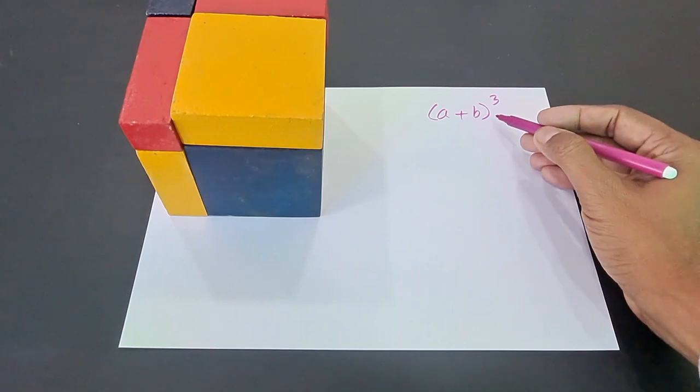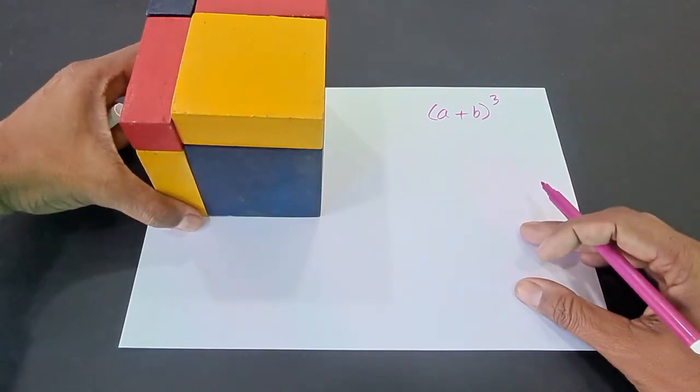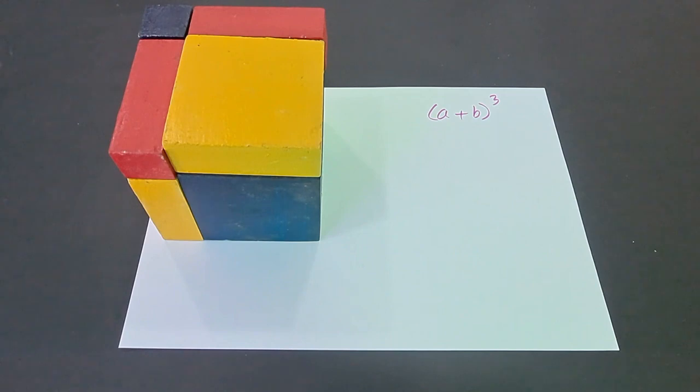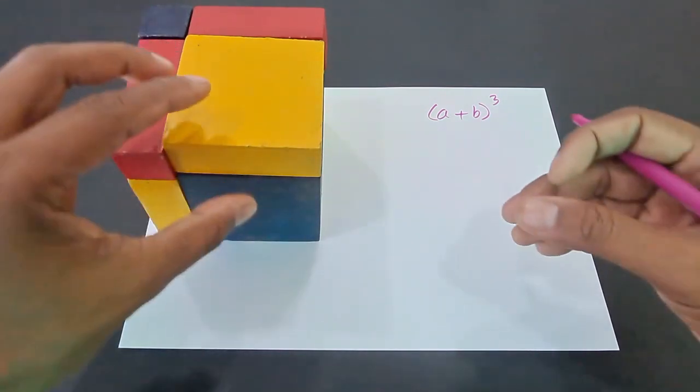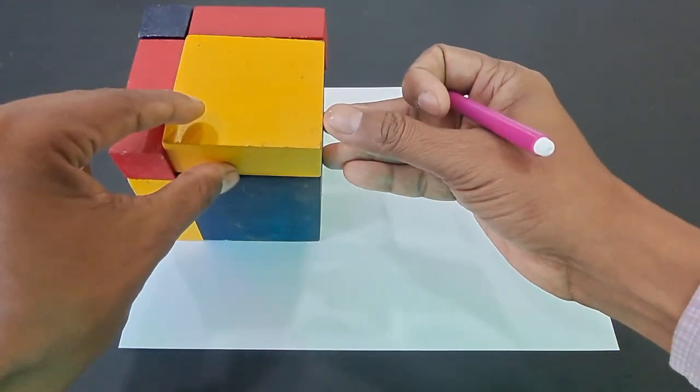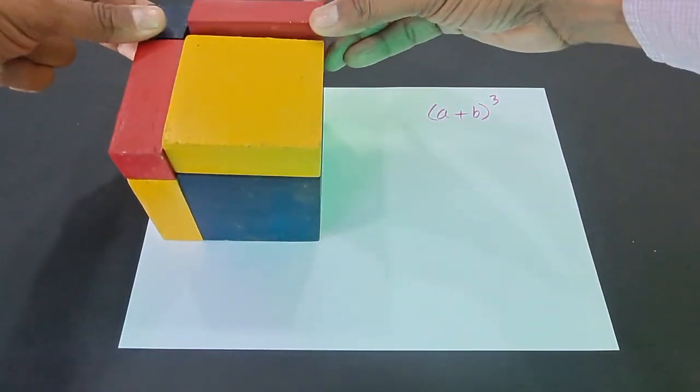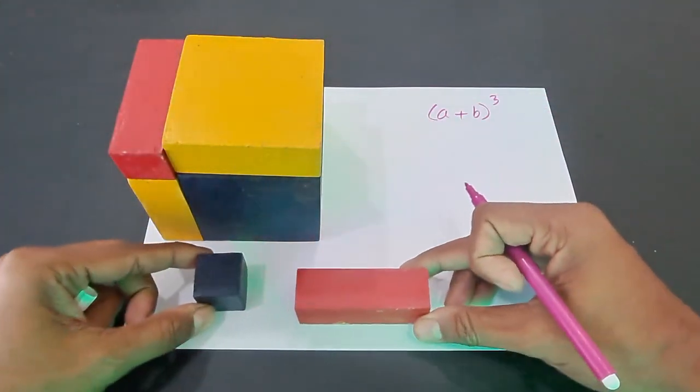Now how do we derive the identity? We divide this cube into smaller cubes and cuboids by cutting it vertically and horizontally. So you can see we have separated it out into various different 3D shapes.